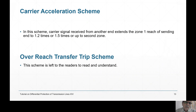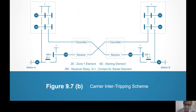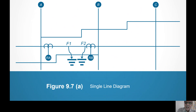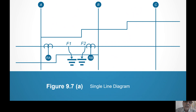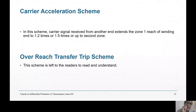Another is the carrier acceleration scheme, which is more or less similar. In the carrier acceleration scheme, if the fault has occurred at F2 and it is in zone 1 of RB, then zone 1 of RB will send a signal to RA to extend its zone 1 to whatever length multiplier is selectable — up to B or beyond B. So zone 1 at A will accelerate; the setting of zone 1 will be multiplied. Carrier acceleration is very commonly used, along with carrier inter-tripping.